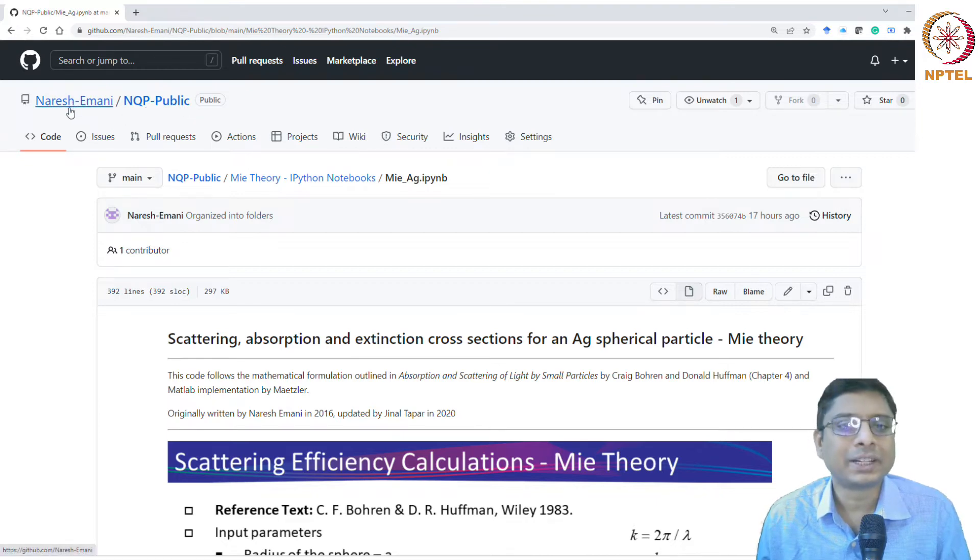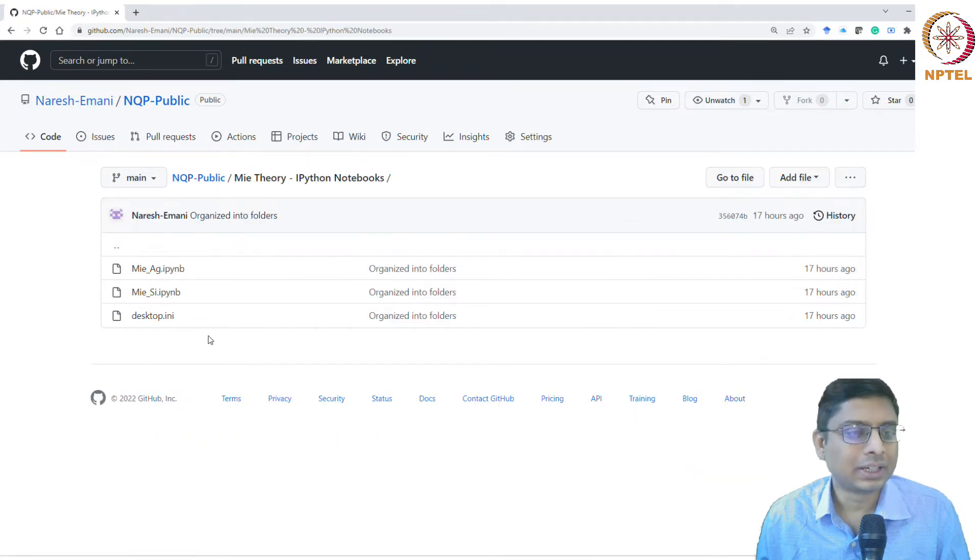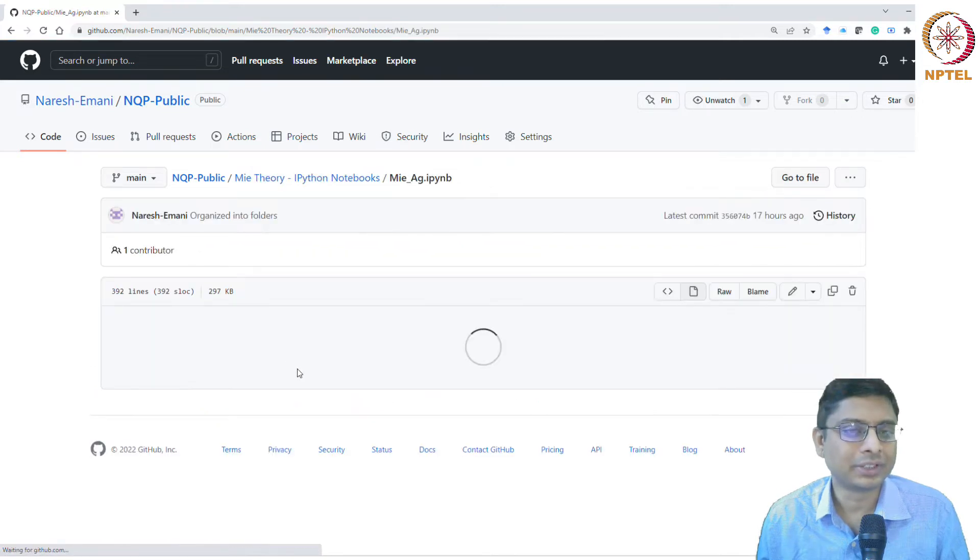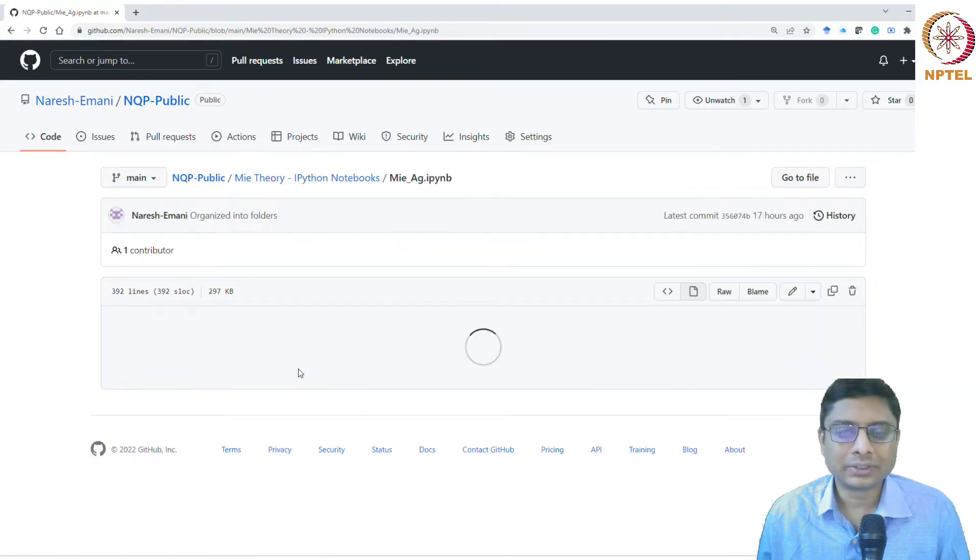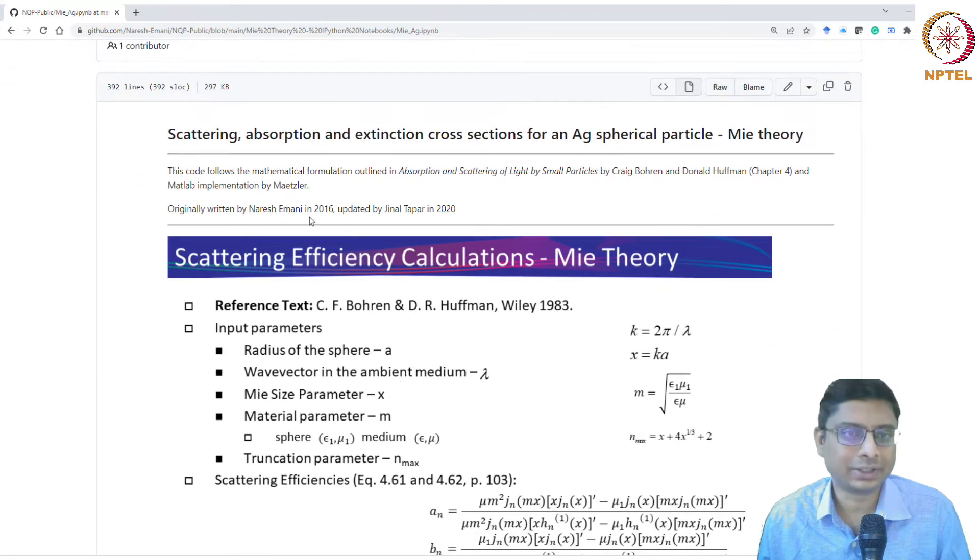If you search for my name on GitHub, you'll find this folder. In there you'll find the notebooks that are available. For example, there's Mie theory notebooks. Let me look at Mie_Ag_silver. This is the notebook that will load, and I've tried to explain the basic concepts in this.